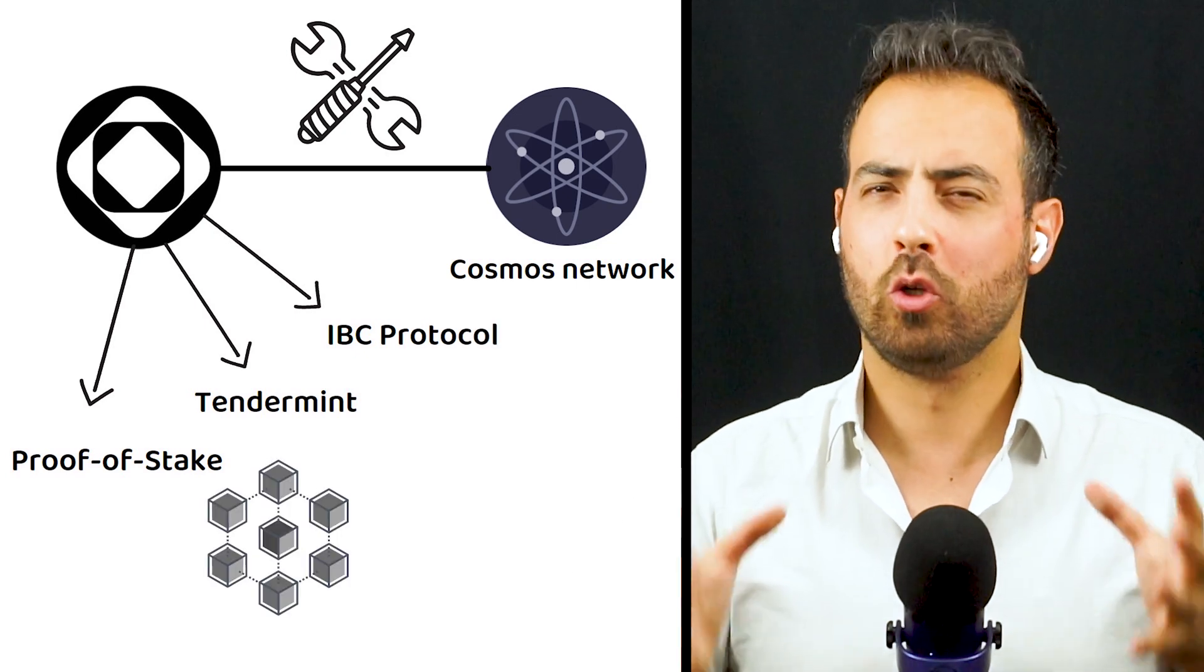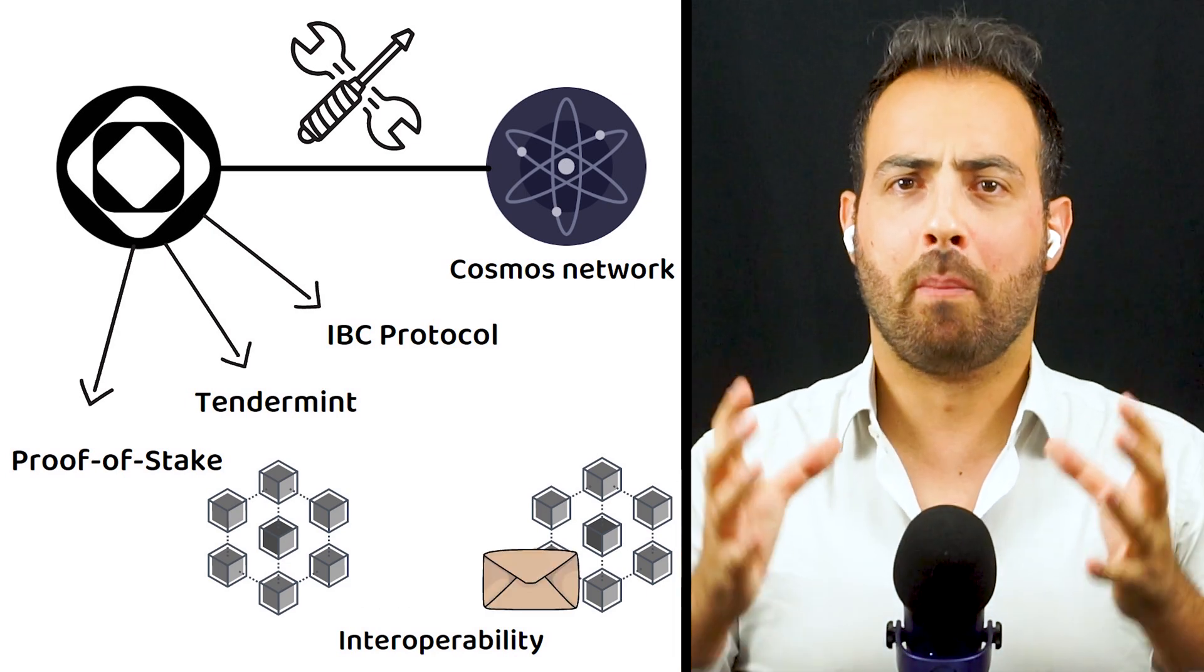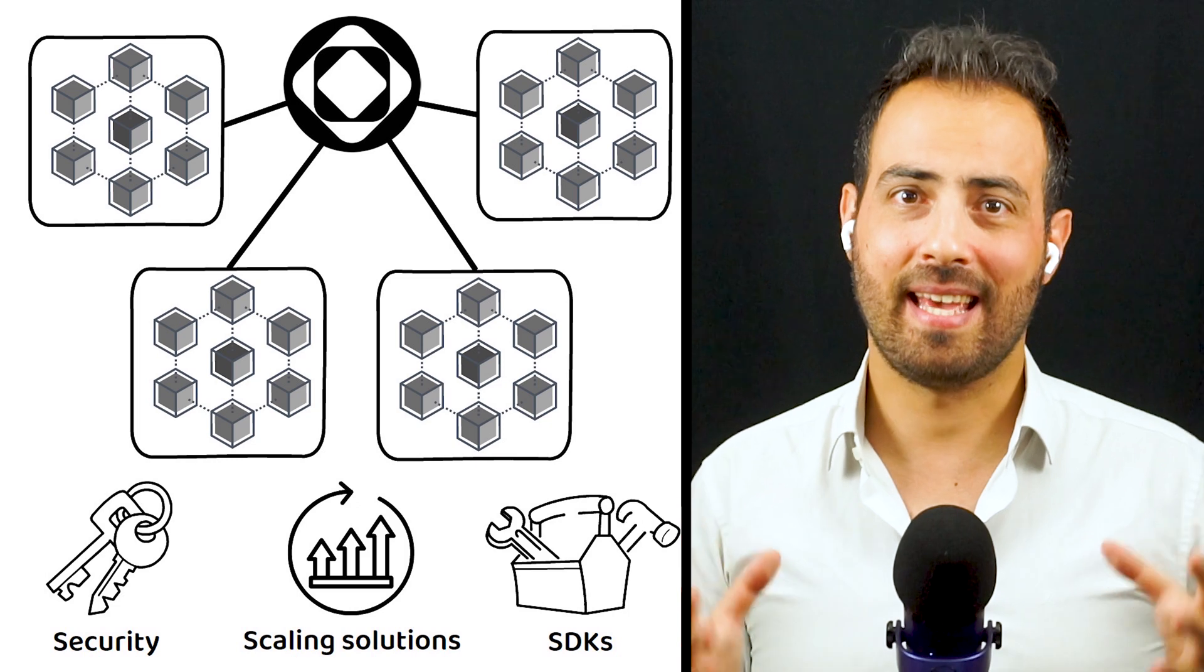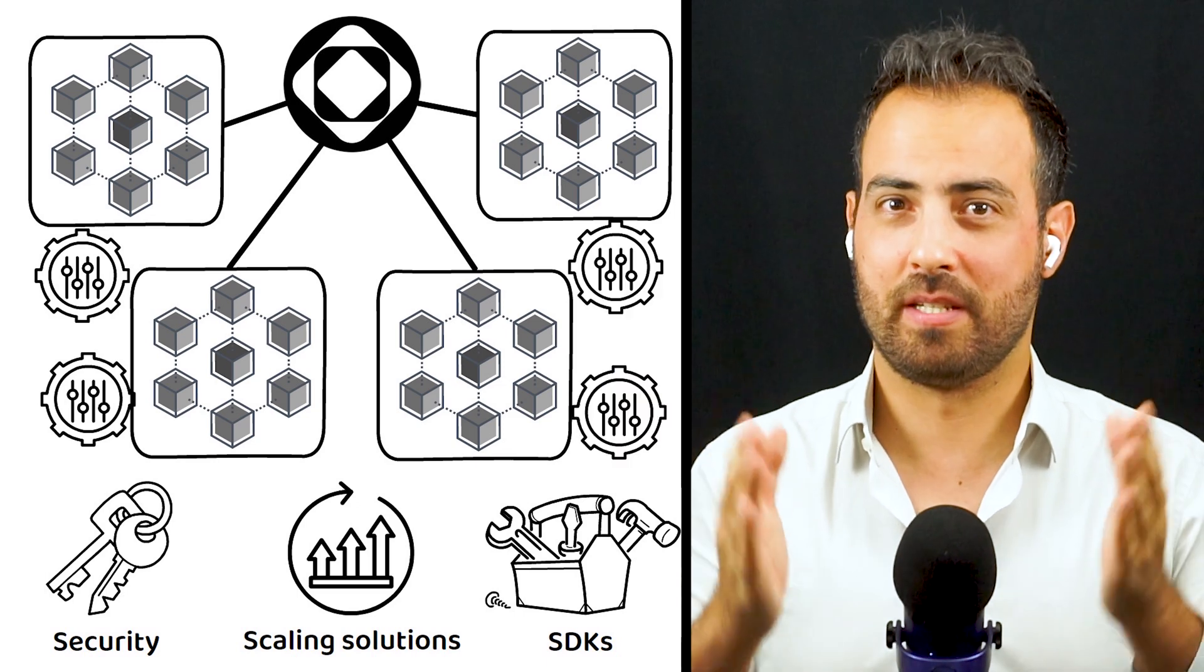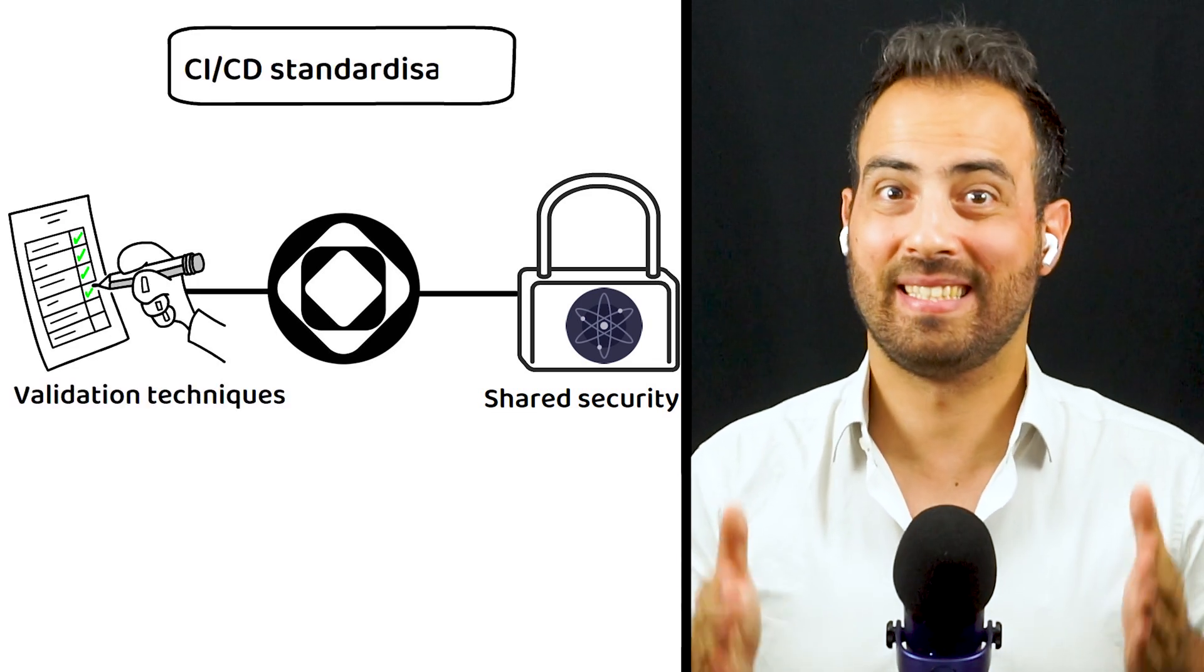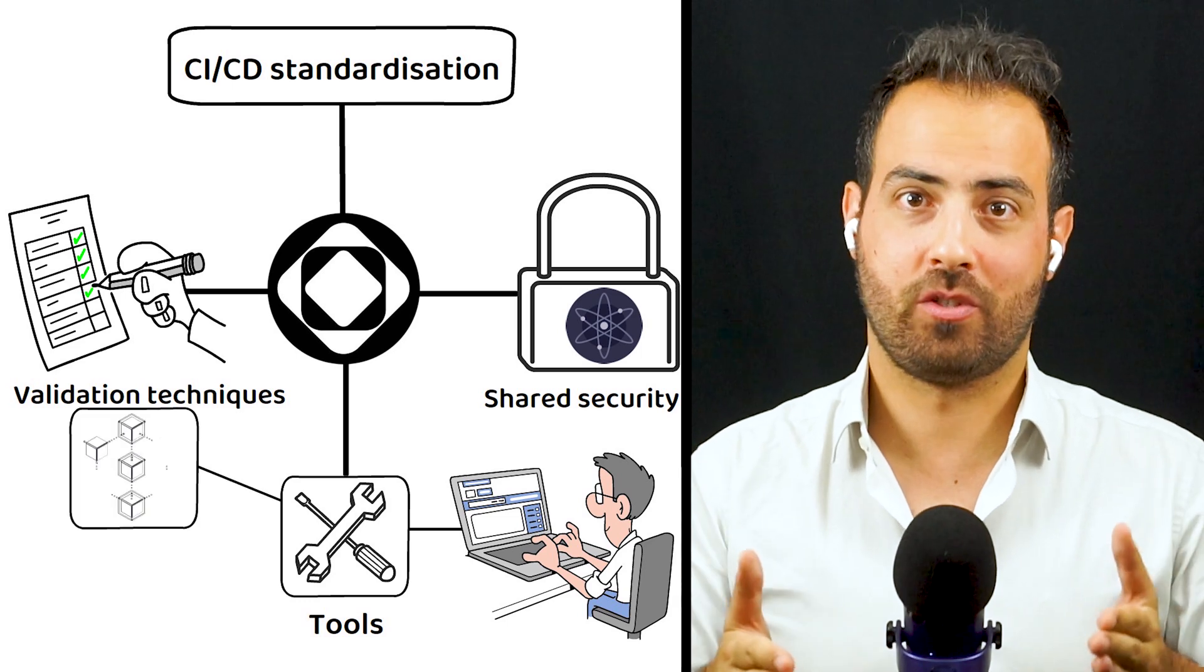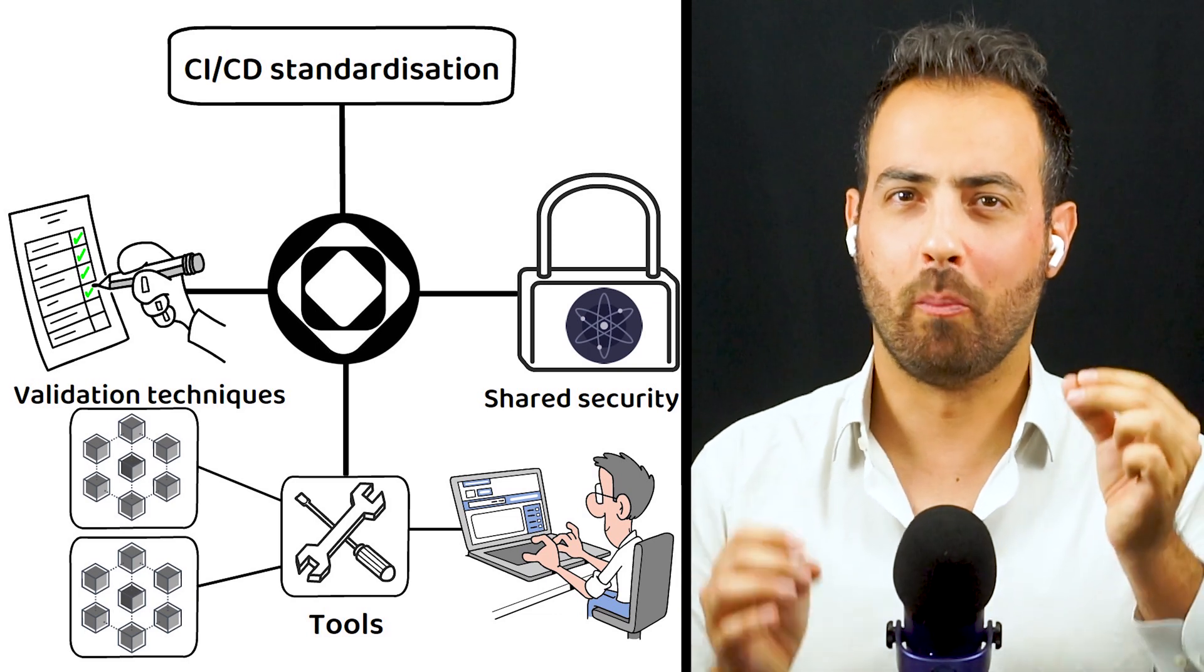Blockchains created through Saga all share the same security, scaling solutions, and SDKs, but each gets its own unique chain which they can customize to suit their specific needs. By utilizing Cosmos's shared security while also providing innovations in validation techniques and the automated use of CI/CD deployment standardization, Saga looks to give developers all the tools to create and launch a layer one blockchain in a few clicks. But let's quickly go over some definitions to make sure we are all on the same page.